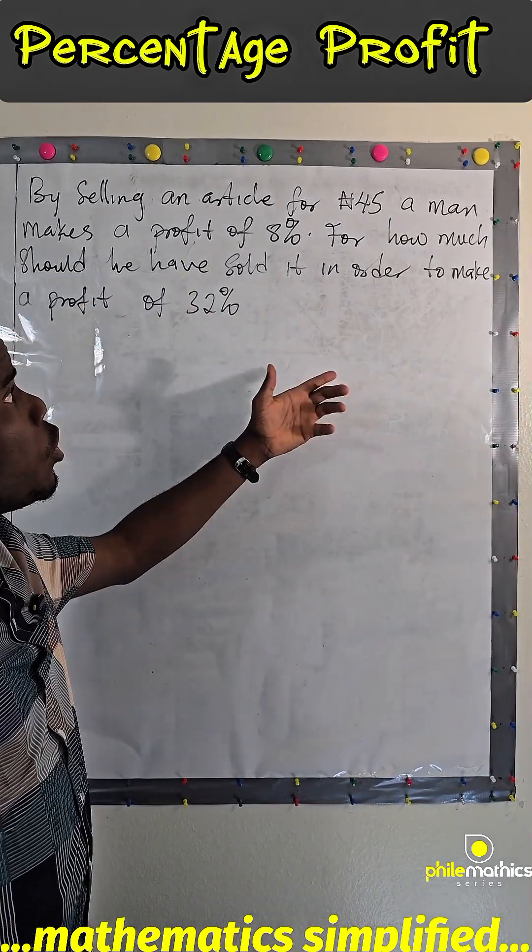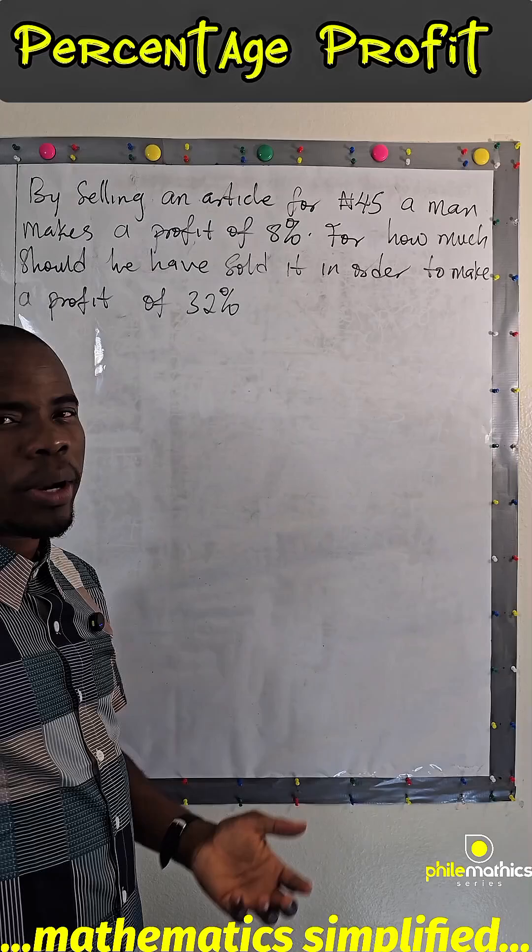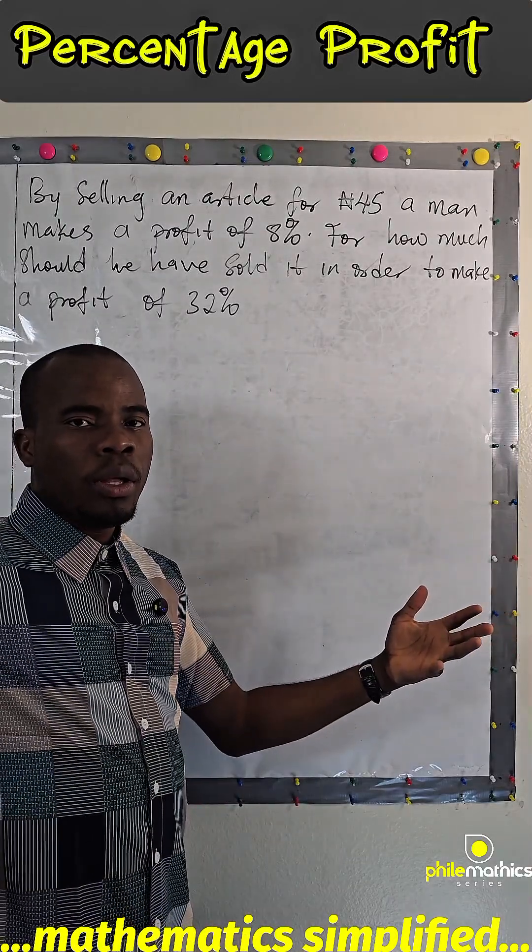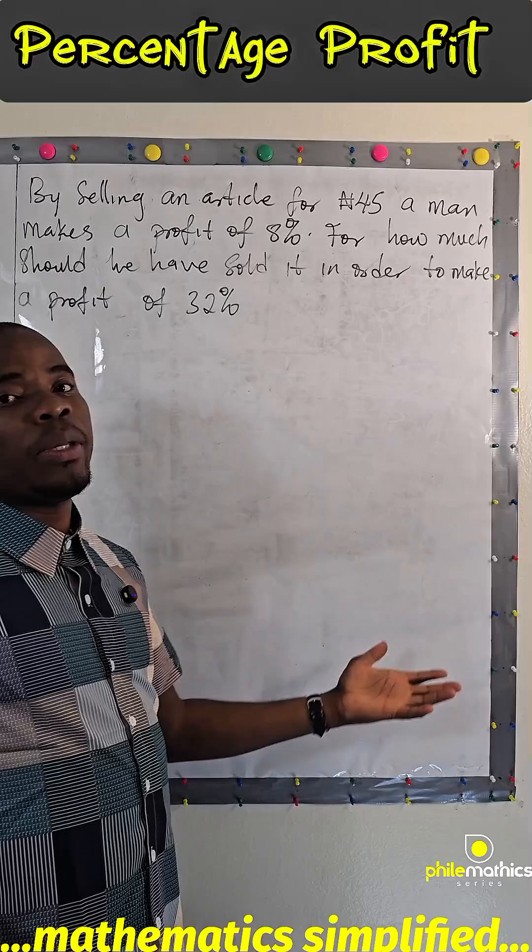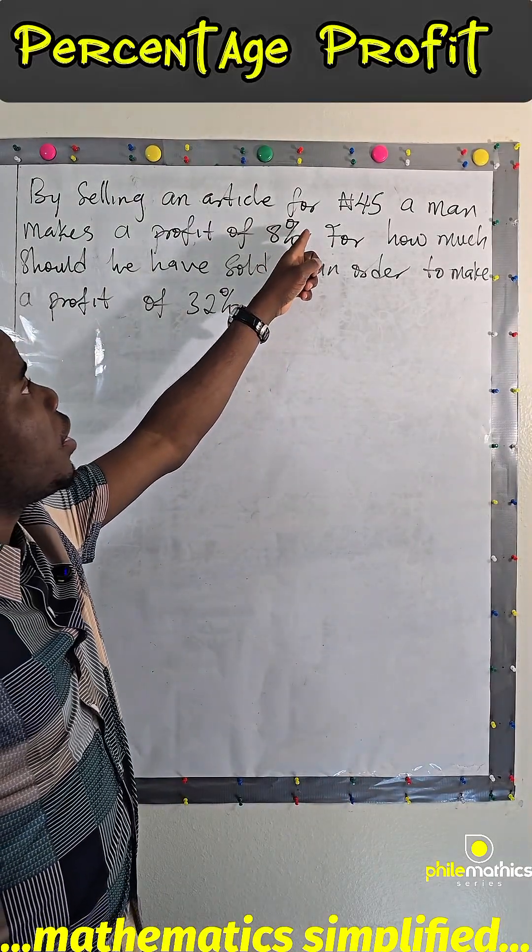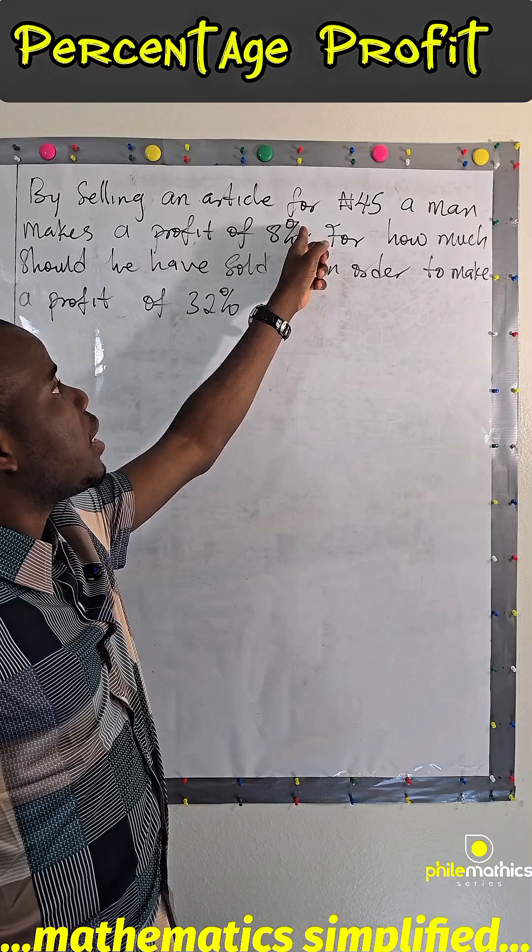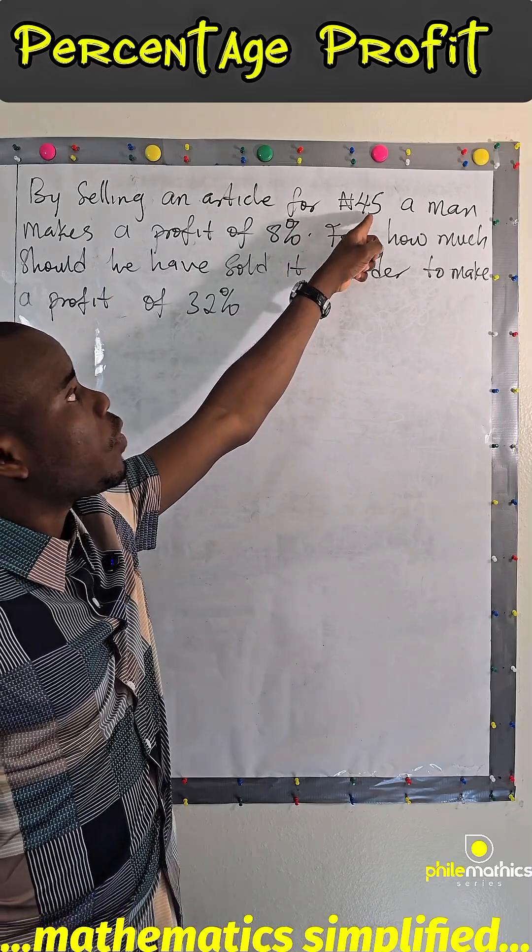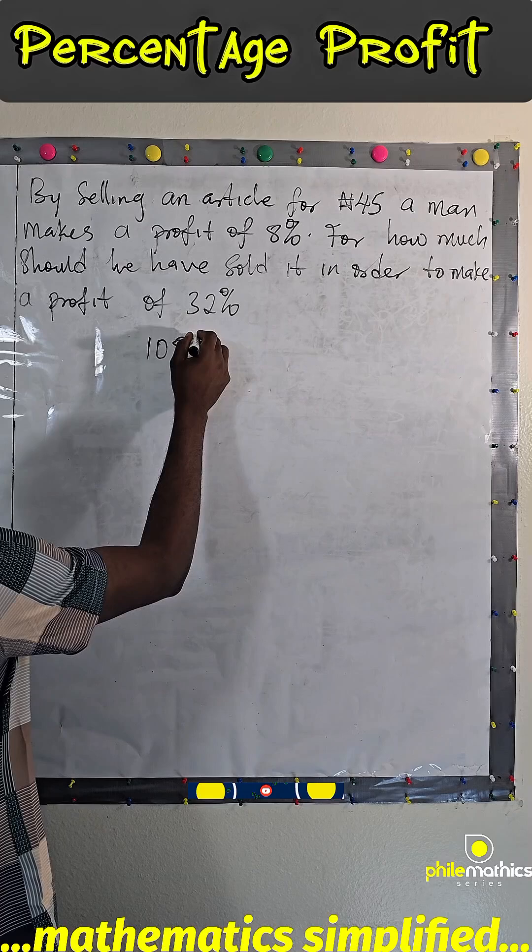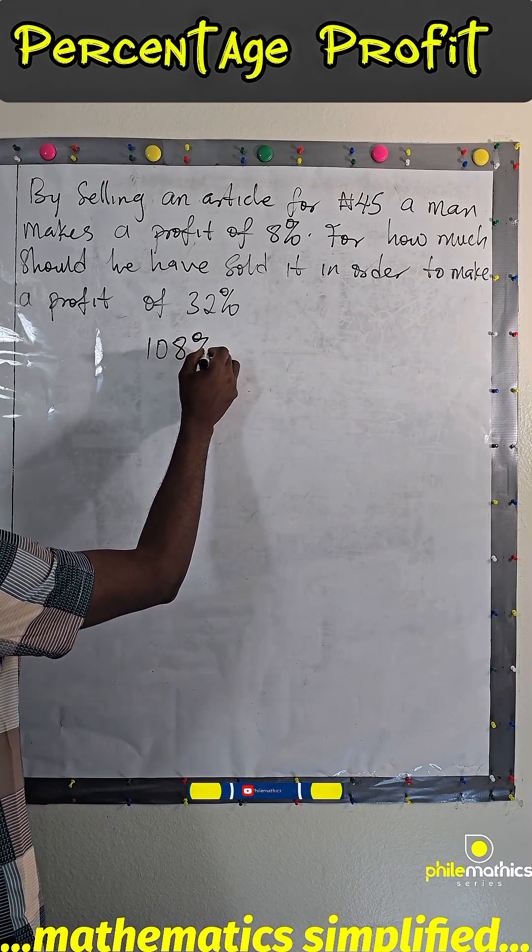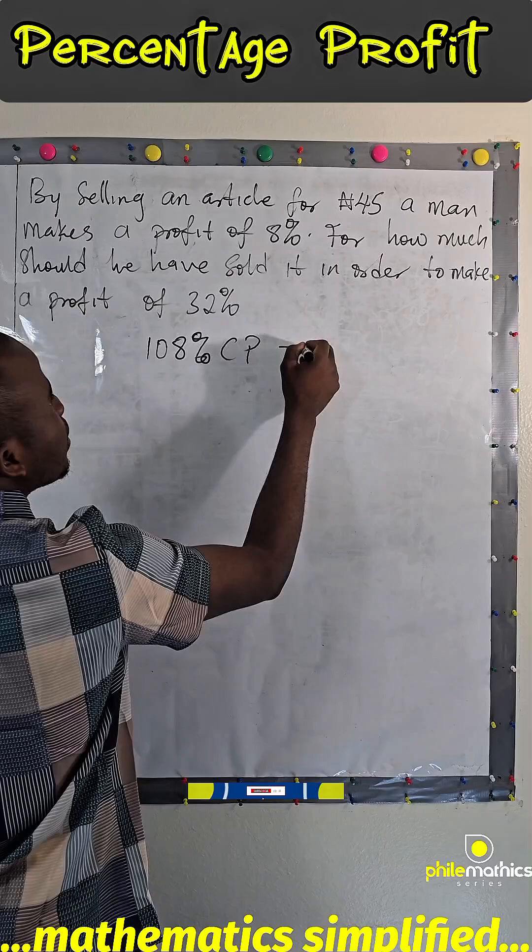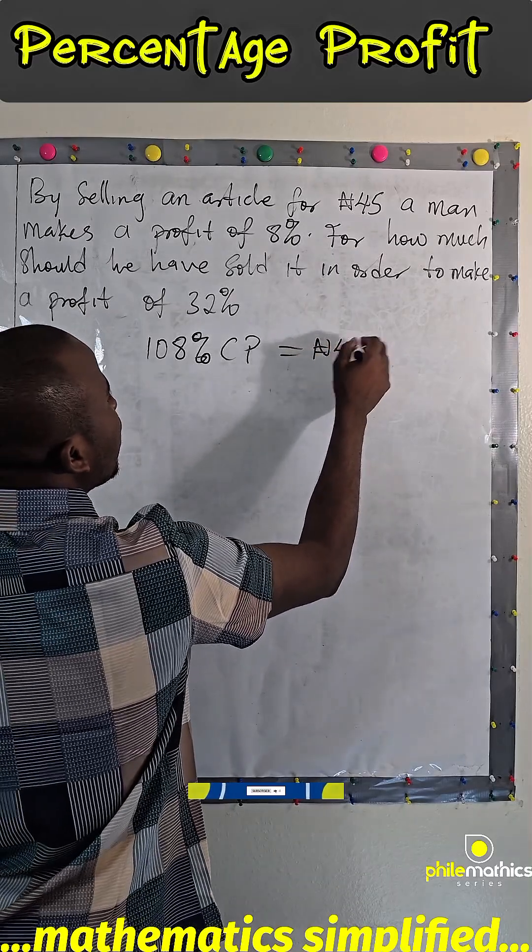The first thing you want to do is to find his cost price. And we usually assume his cost price to be 100%. So, for him to make a profit of 8% at 45 Naira, it means 108% of his cost price is what he made as 45 Naira.